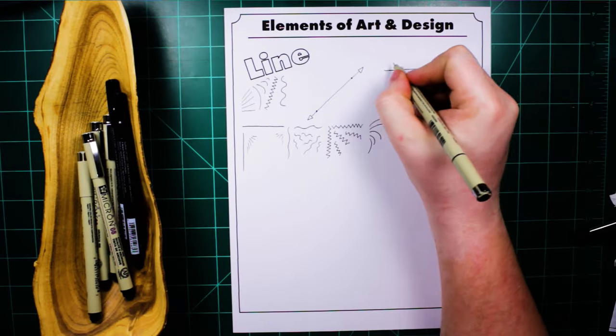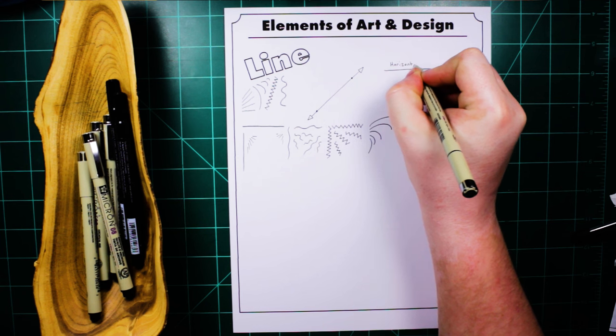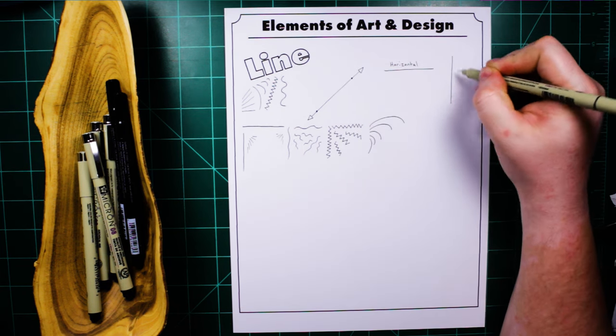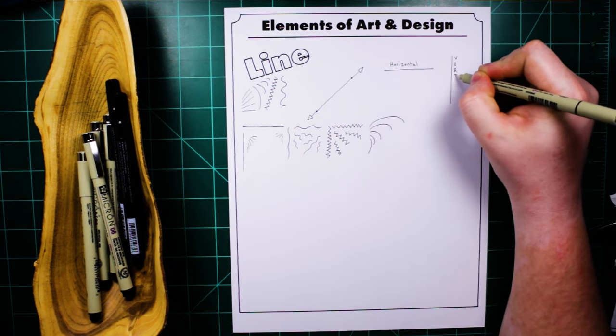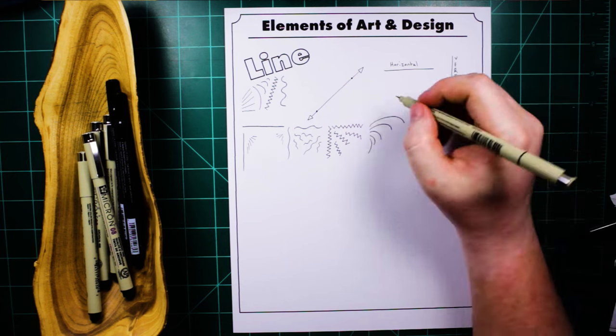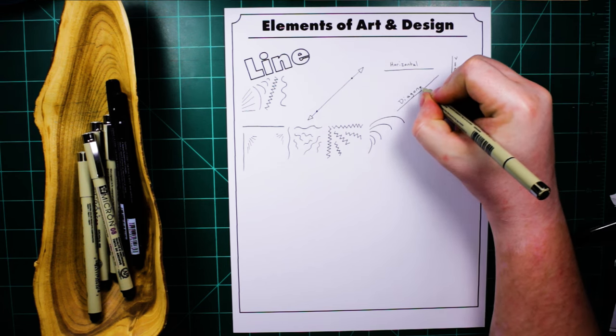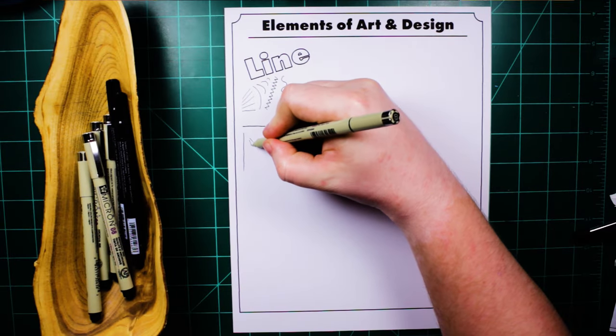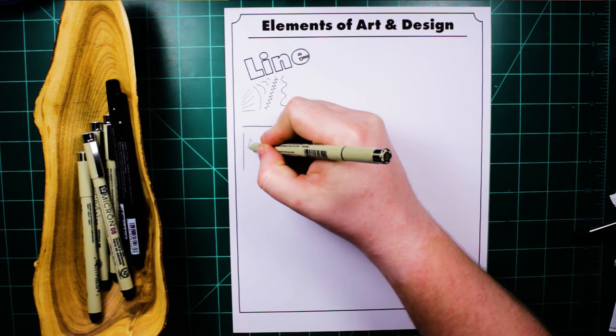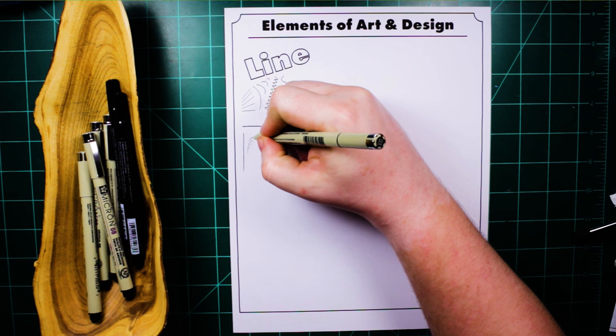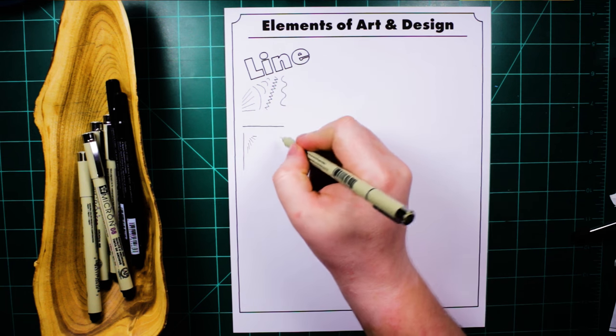First, lines can go in different directions. The three main classifications for direction are horizontal, sideways, vertical, up and down, or diagonal, anywhere between horizontal and vertical. It's important to note that diagonal lines can go in lots of different directions, so you often have to be more specific when talking about them.